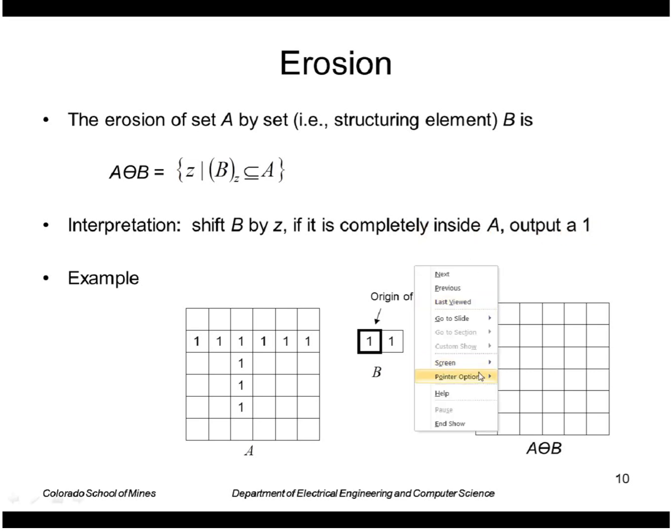Let's do an example here. We have this set A consisting of these ones, everywhere else we have zeros. We have a set B here, a structuring element where the origin is indicated by the heavy outline. What we want to do then is shift B all over the set A. For example, I'll put B here and I ask, is it completely inside A? No, so I output a zero there at the origin of B. No matter where I shift B along this top row, I'm going to get zeros because it doesn't completely fall inside A.